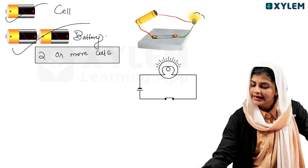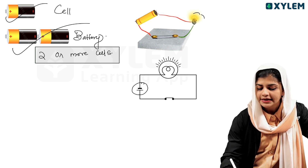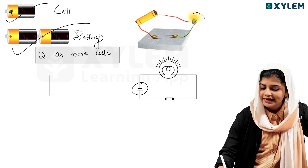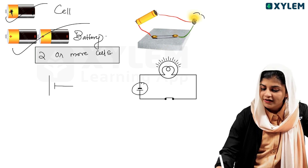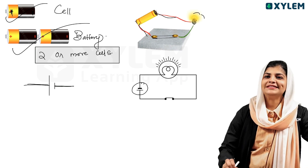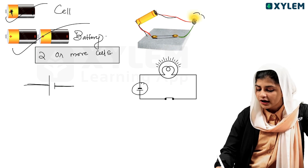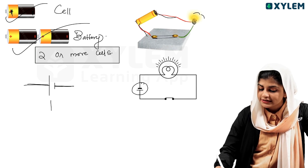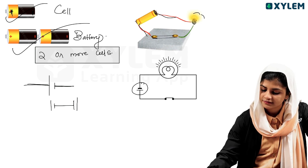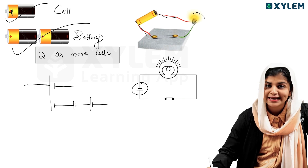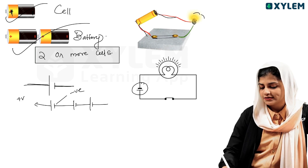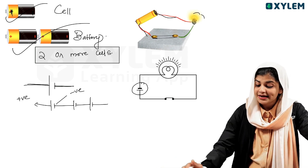When we call it a cell, we represent it symbolically with a positive and a negative terminal. The small line corresponds to negative and the big line corresponds to positive. So the positive terminal is represented by a long line and the negative terminal by a short line. That is the symbolic representation of a cell.